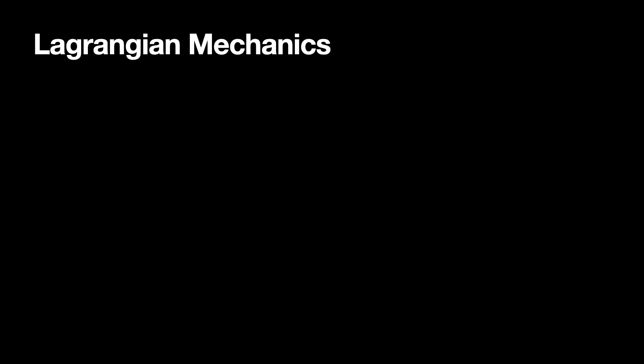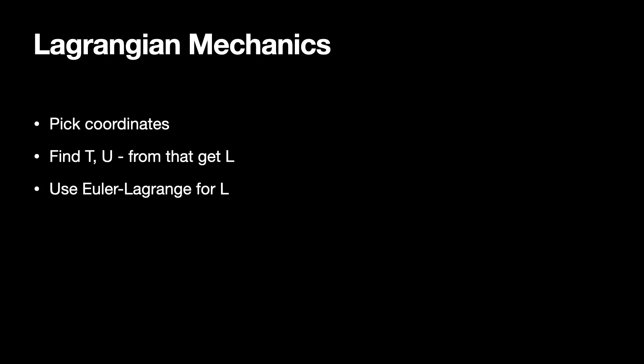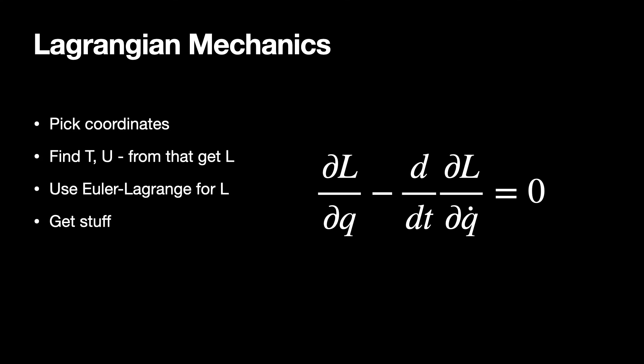In Lagrangian mechanics, we pick some coordinates — and that's one of the things that makes Lagrangian so powerful, we don't have to use Cartesian coordinates. From that, we find the kinetic energy function T and potential energy function U, then find the Lagrangian T minus U. From that, we use the Euler-Lagrange equation for L in as many dimensions as we need. Ideally, we get something like the second derivative of one of the coordinates — that's the acceleration — and from there we integrate to find whatever we need. In generic coordinates Q: the partial of L with respect to Q minus the time derivative of the partial of L with respect to Q-dot equals zero.